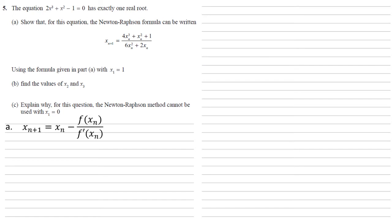The Newton-Raphson formula looks like this: x n plus 1 equals x n minus f of x n over f dash of x n.